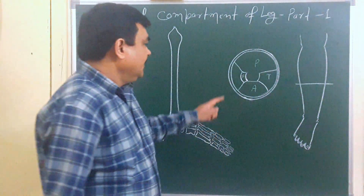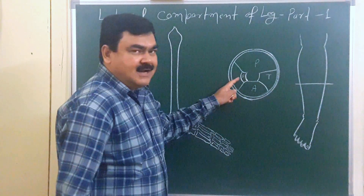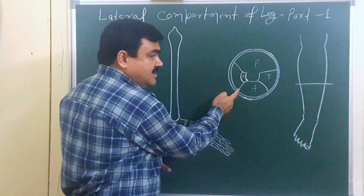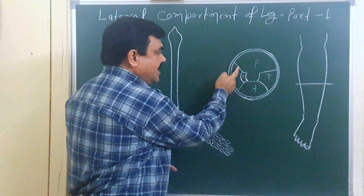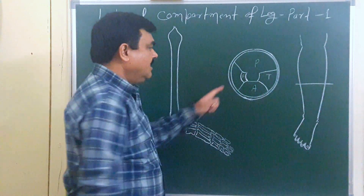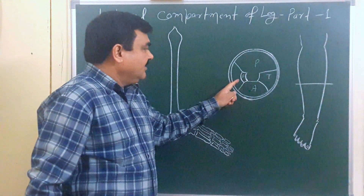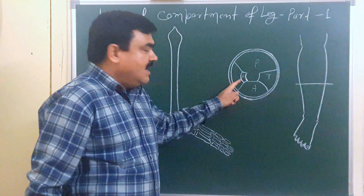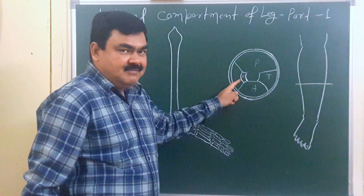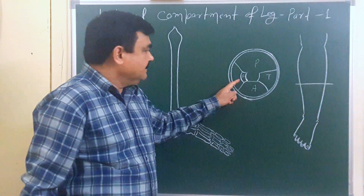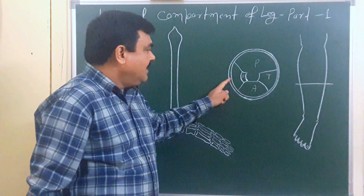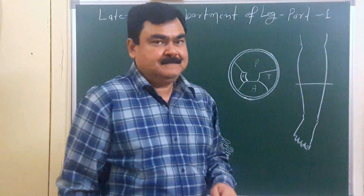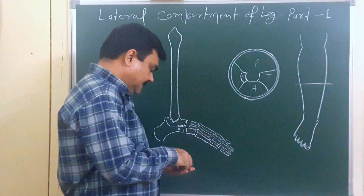Today we will discuss about the lateral compartment. The boundary of the lateral compartment is: anteriorly by the anterior intramuscular septum, posteriorly by the posterior intramuscular septum, medially by the lateral surface of the fibula, and laterally by the deep fascia.